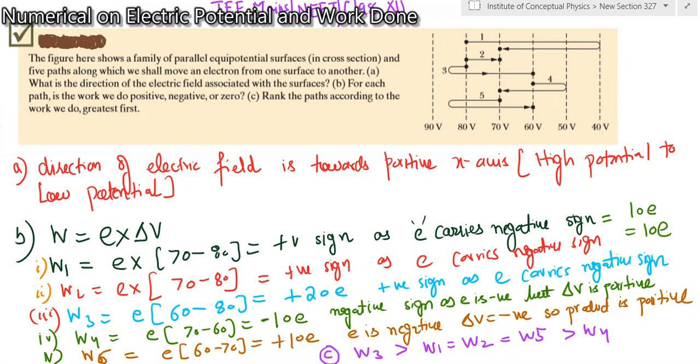I have done five calculations for the electron because five paths are given, and in each case you can see the first case, for example, e into delta v. That's the formula for work done. Now, the e which is electron, the sign is negative. Delta v sign will come from final minus initial potential.